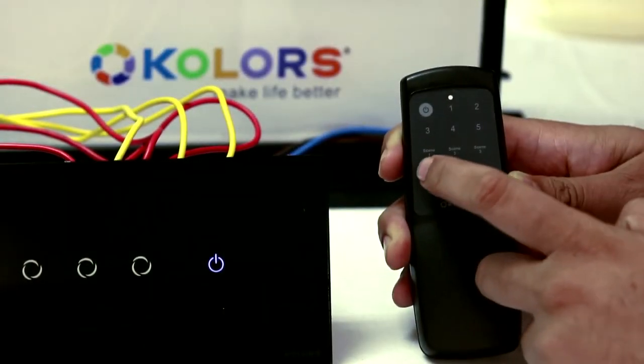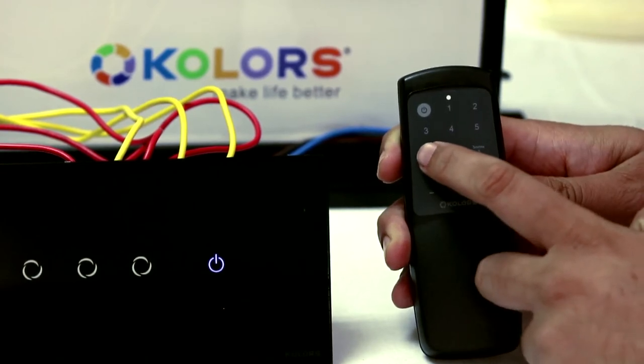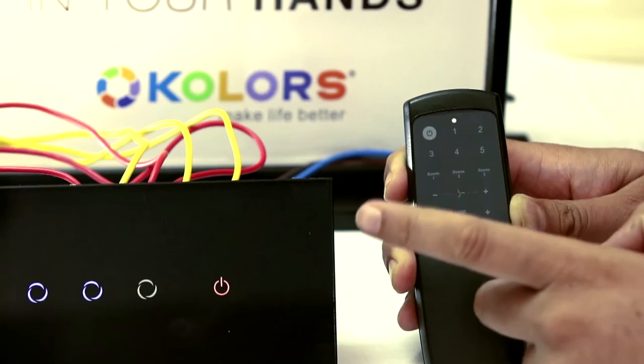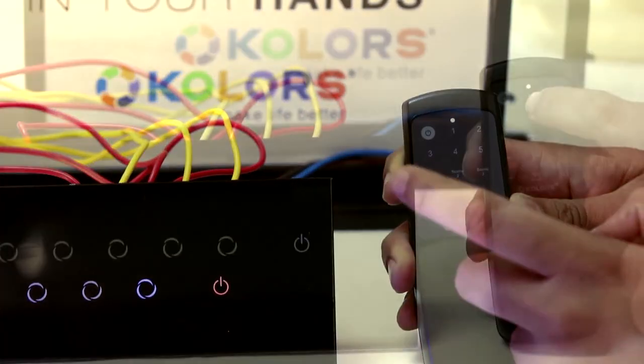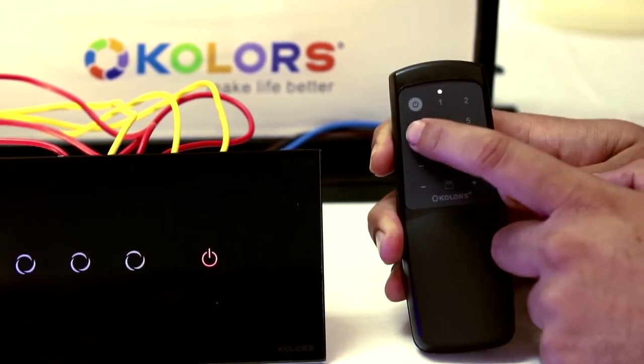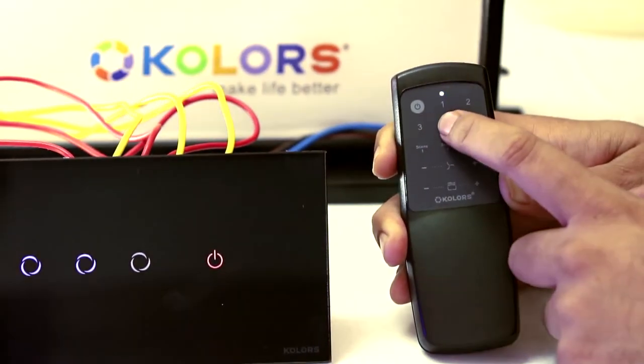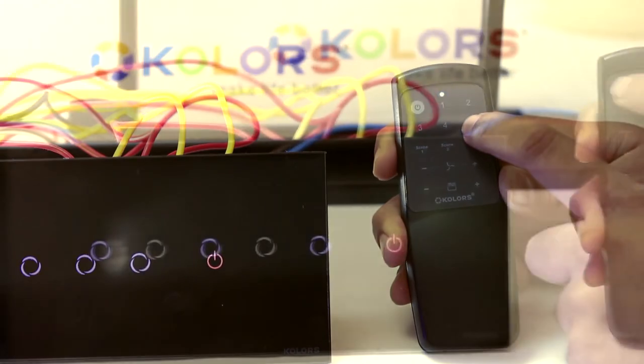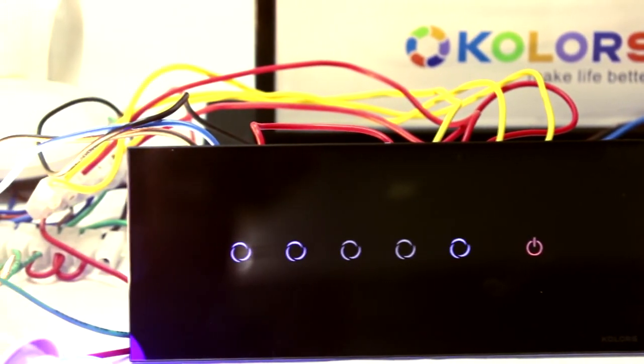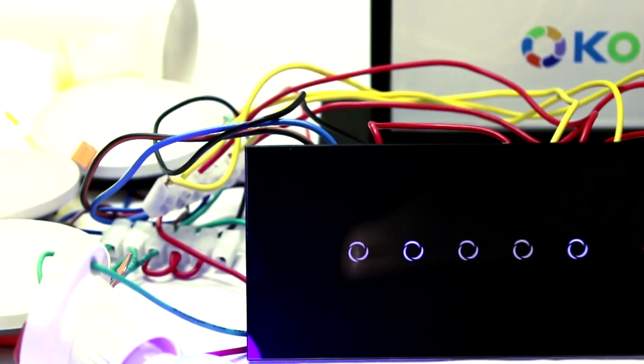On the remote, there are 3 switch symbols which are scene 1, scene 2, and scene 3. On pressing these switch symbols, factory configured switch combinations on panels operate. Thus, with required wire combination, different light loads can be operated to create ambience.